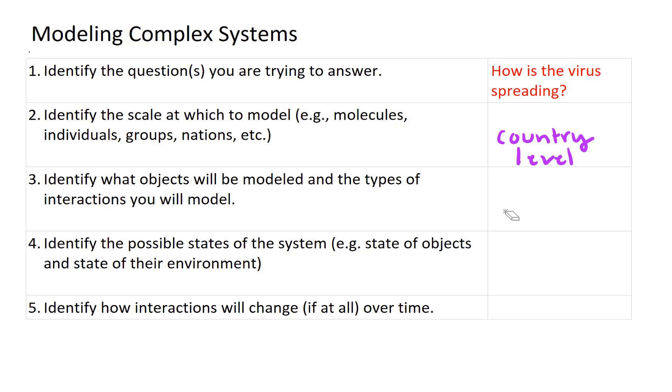So third, identify what objects will be modeled and the types of interactions you will model. So the objects that we're going to model are people, and these people will move around from one place to another, maybe from country to country.